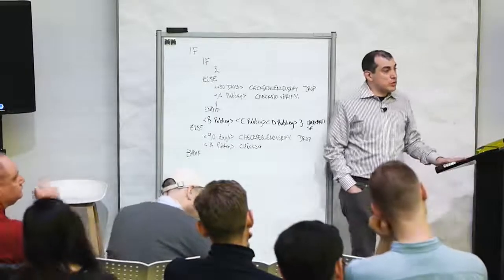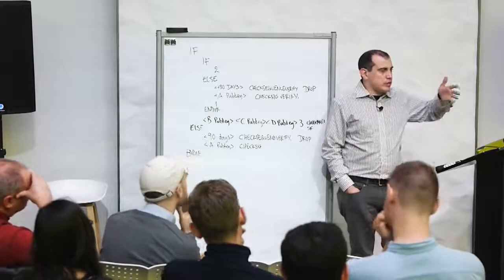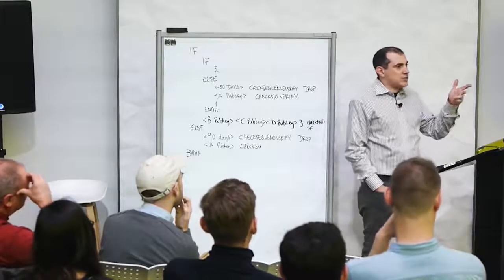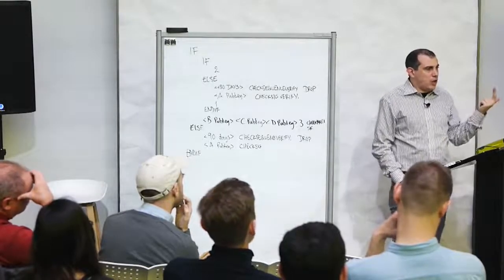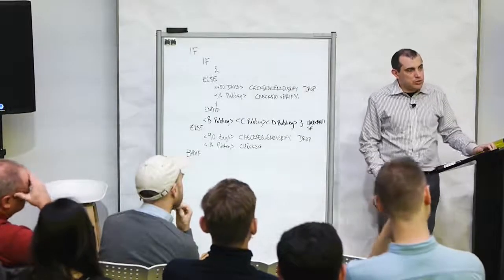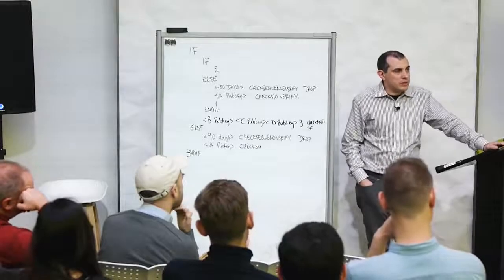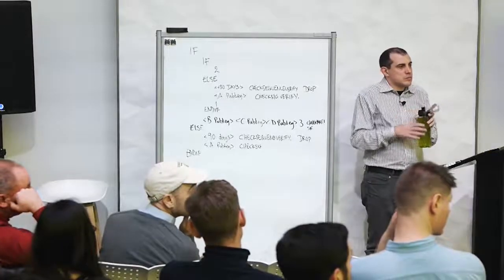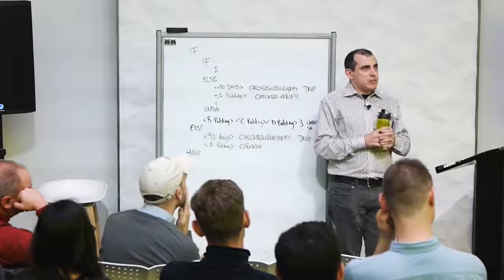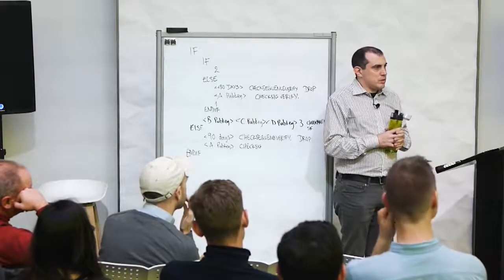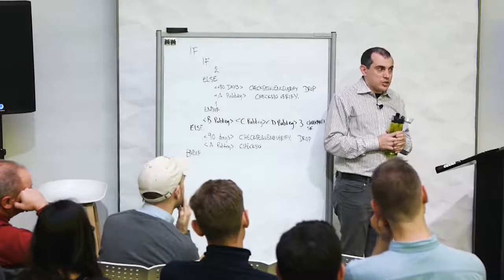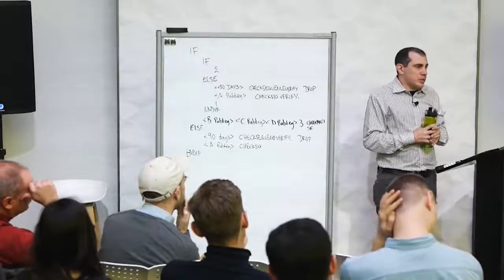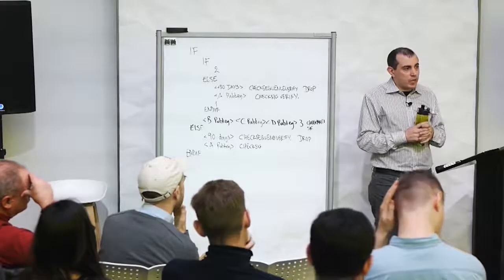Bitcoin is a transactional state engine that, among other things, also transmits value. It is a non-Turing-complete transactional state engine, as compared to Ethereum which is a fully Turing-complete transactional state engine. You can do a lot with an abstract state machine.